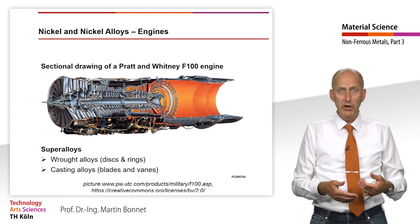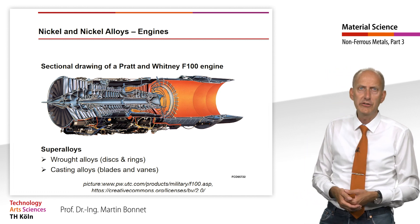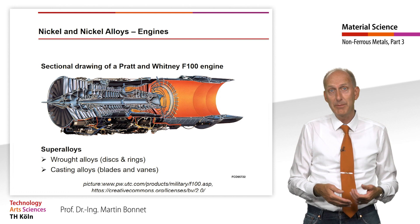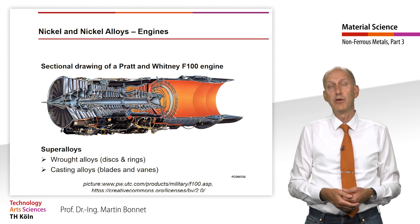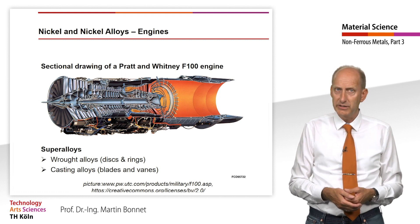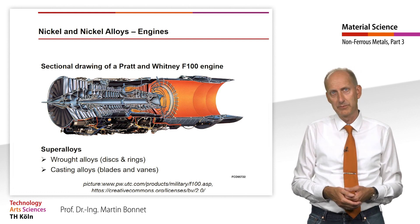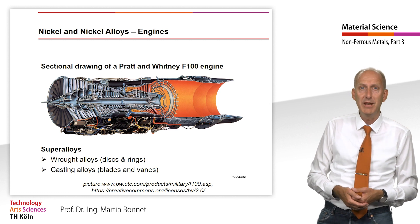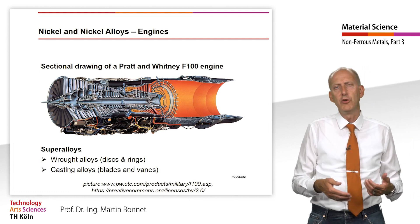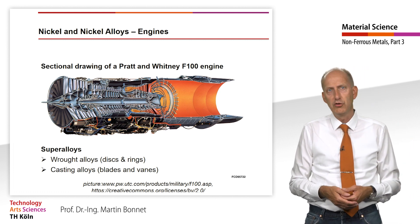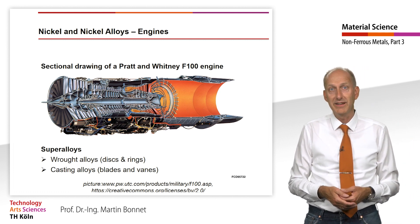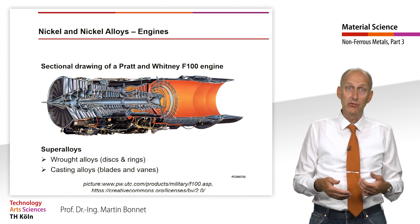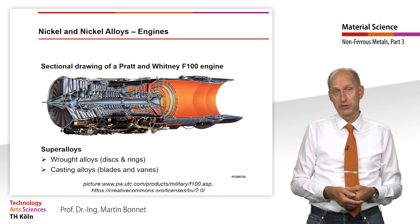These are rod alloys for discs and rings, and cast alloys for blades and vanes. Rod alloys are characterized by high strength up to temperatures of over 700°C. Today, casting processes can be controlled so well that turbine blades and vanes are cast rather than forged.